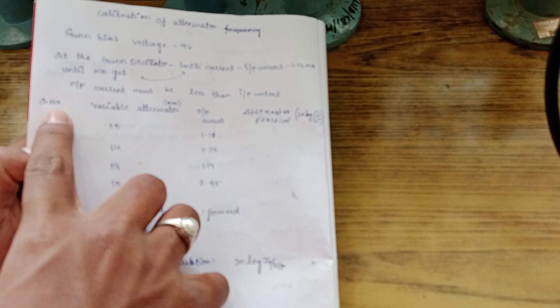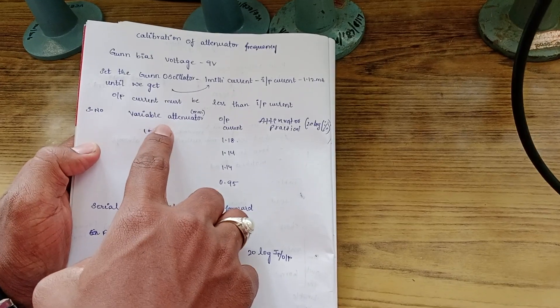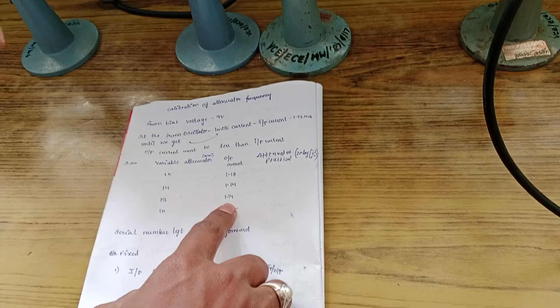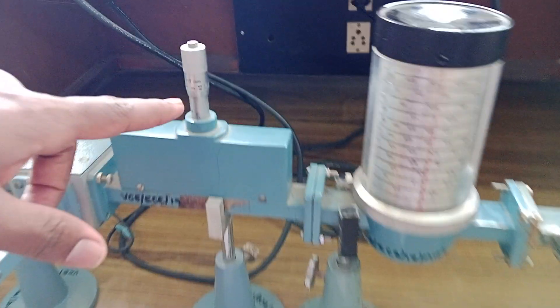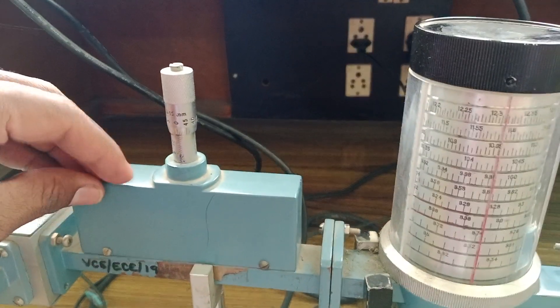Once you keep it at the 15 reading, you have to draft a table like this with serial number of the reading, variable attenuator, distance of the variable attenuator, and output current. Distance of the variable attenuator is what you are adjusting here. First I have kept 15.